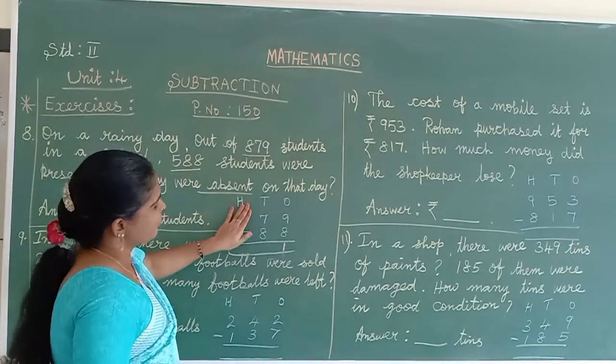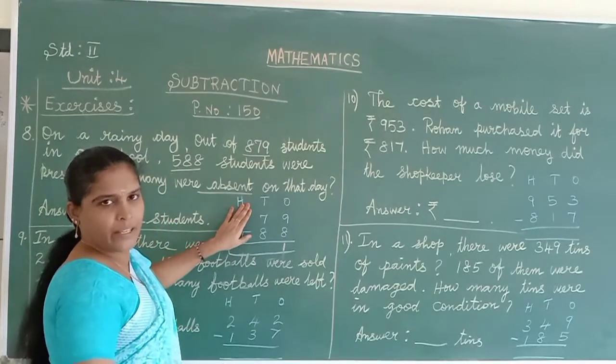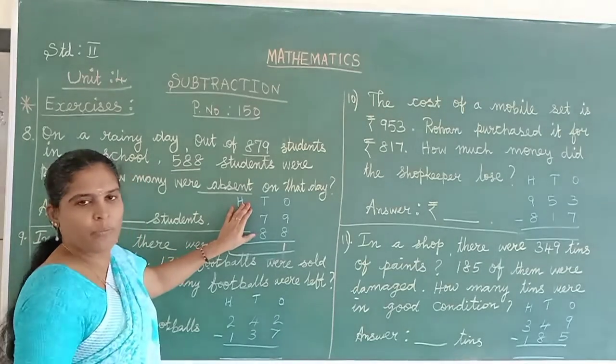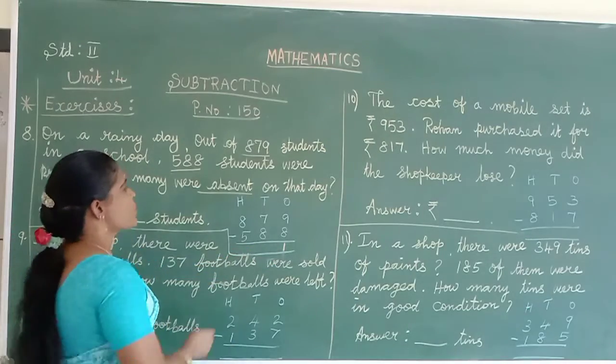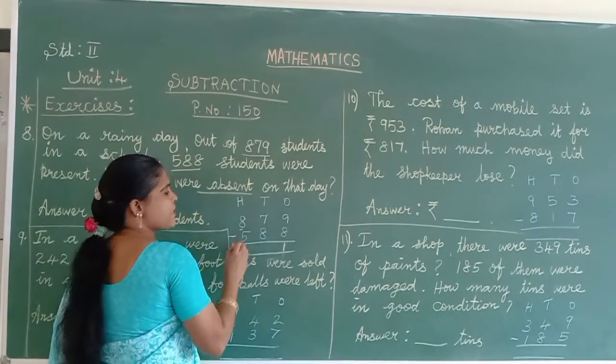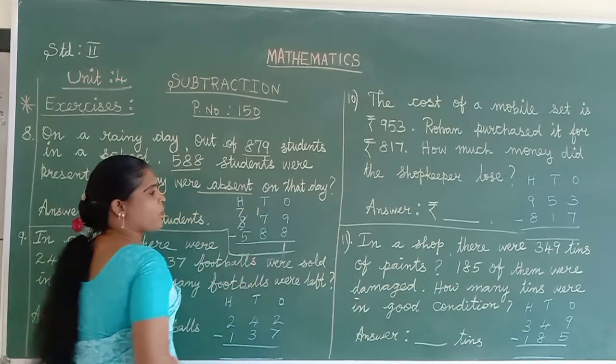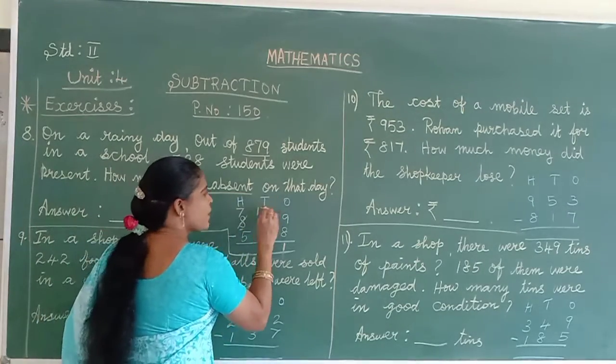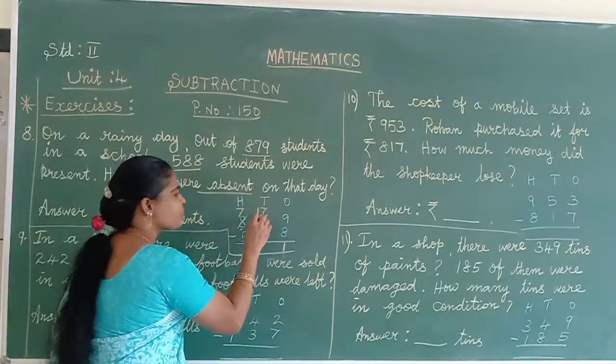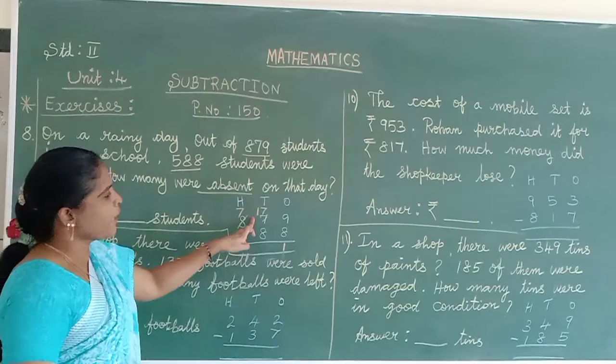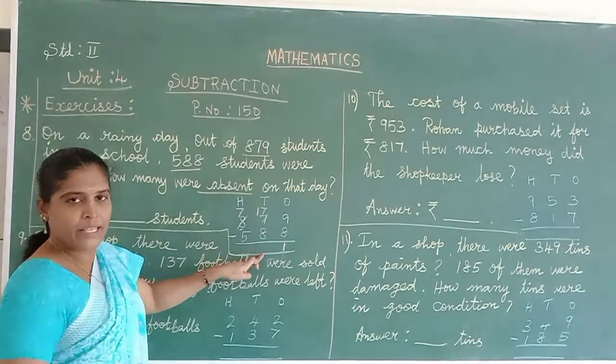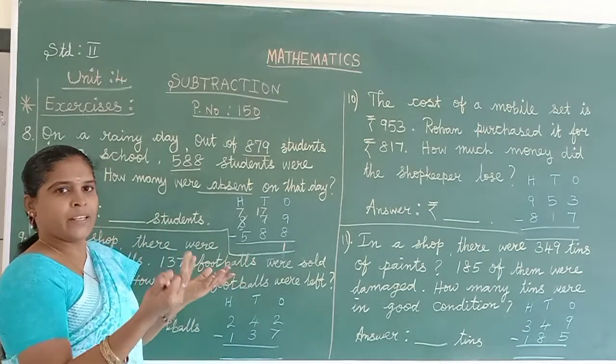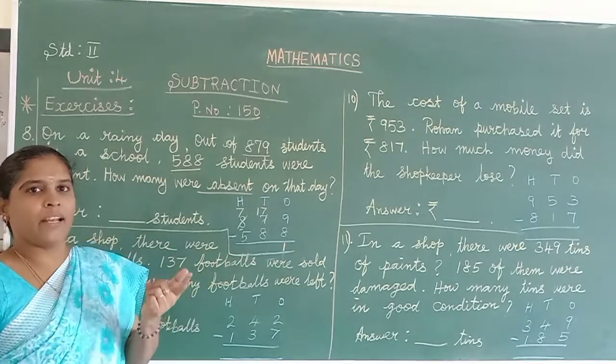Then come to tens place. Check the numbers: 7 and 8. The smaller number is on top, bigger number is on the bottom. Means we should do borrowing. So in this hundreds column, 8 is there. We can get 1 from this number. 8 minus 1 equals 7, write it there. Cross out the number and write there. Now you can subtract 17 minus 8. 17 in the mind, 8 on your finger. Before: 17, 16, 15, 14, 13, 12, 11, 10, 9.